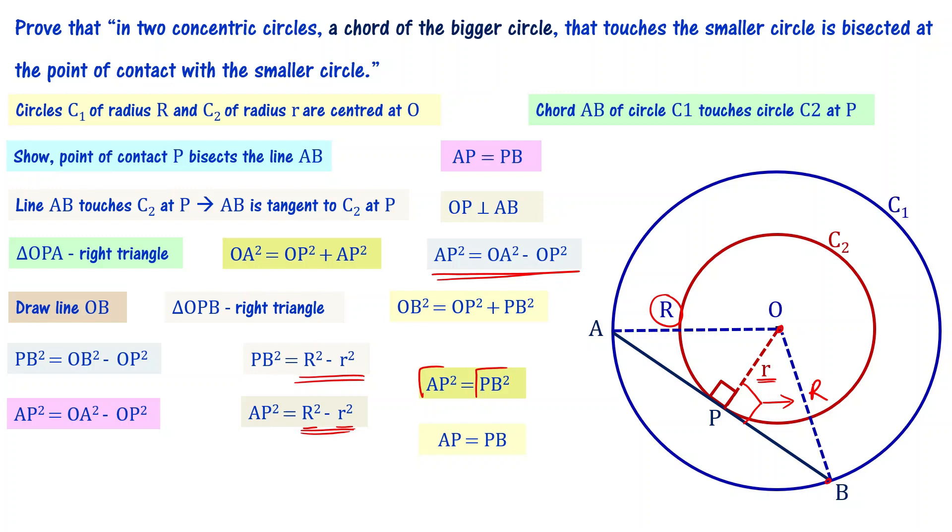This is what we wanted to show. AP equal to PB is what we had to demonstrate. So, since AP equals PB, we can say that point of contact P bisects the line AB. Thank you.